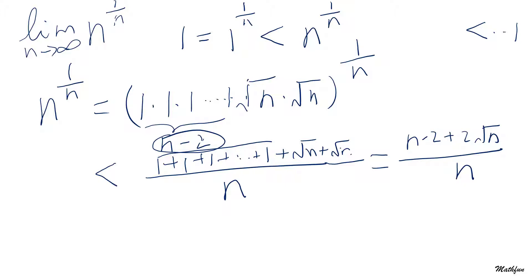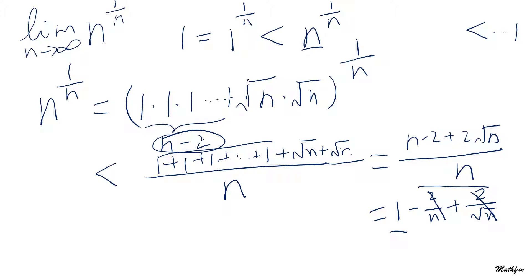So the nth root of n is smaller than (n minus 2 + 2√n) / n. What is the limit of this upper bound when n tends to infinity? It equals 1 minus (2/n) + (2/√n), and as n tends to infinity, both extra terms go to zero, so the limit is 1. That tells us the limit of the nth root of n is also 1 by the squeeze theorem.